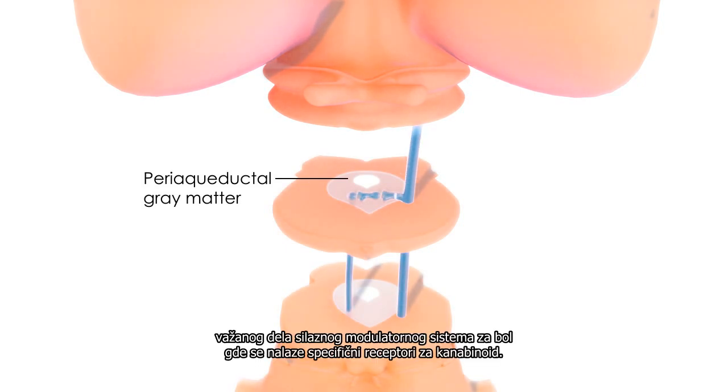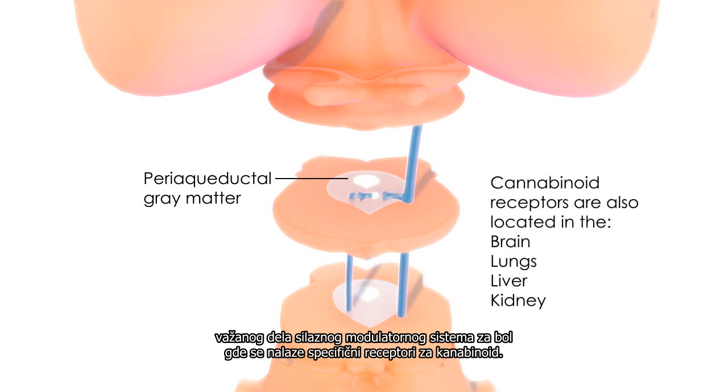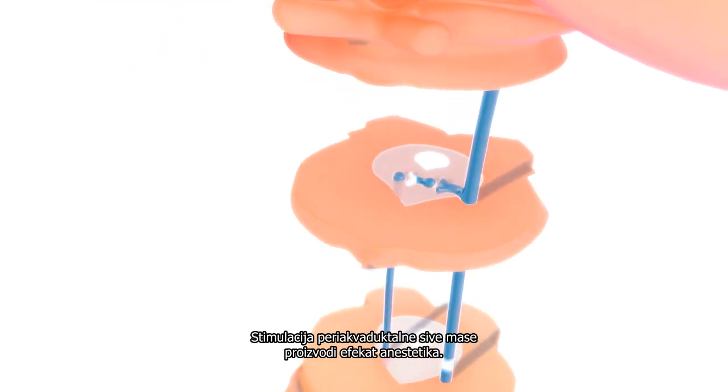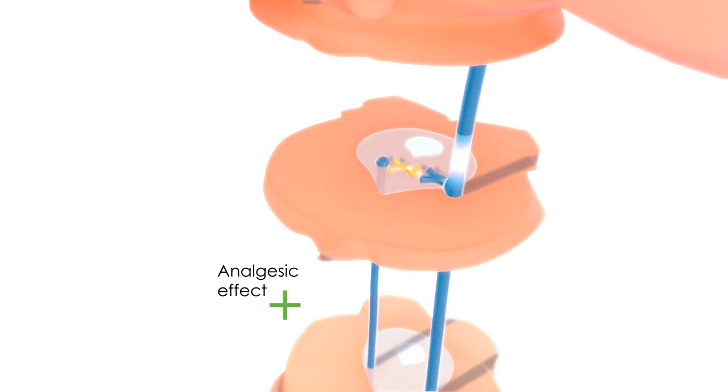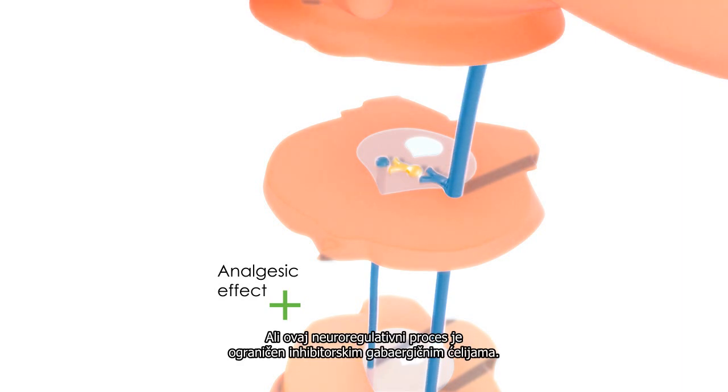An important part of the descending pain modulating system where specific cannabinoid receptors are located. Stimulation of the periaqueductal gray is known to produce an analgesic effect. However, this neuroregulatory process is thought to be tonically restricted by inhibitory GABAergic off cells.